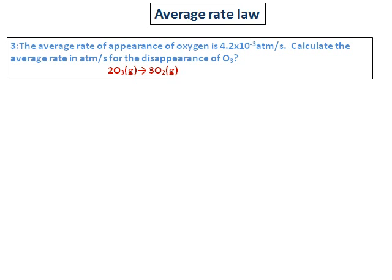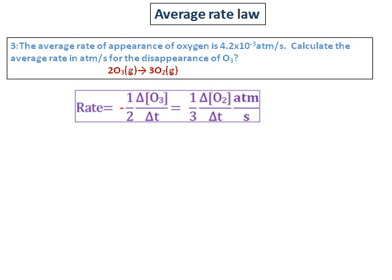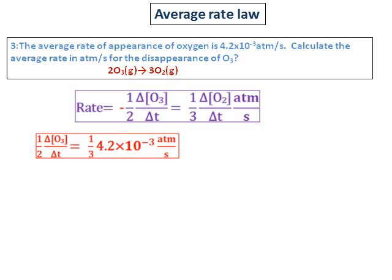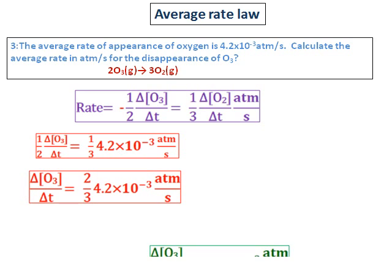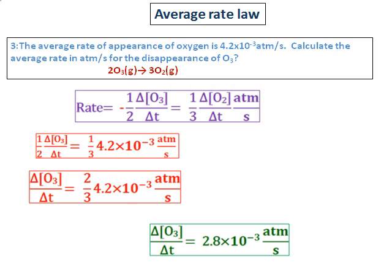The only way this question differs from the previous ones is that previously all concentrations were given in molar, whereas here the rate is given in terms of atmosphere per second. However, this does not change the way we calculate. We write the same rate equation: one half times the change in concentration of ozone divided by delta T equals one third times the change in concentration of oxygen divided by delta T. Substituting the values, the rate at which ozone's concentration decreases is 2.8 times 10 to the power of negative 3 atmosphere per second.